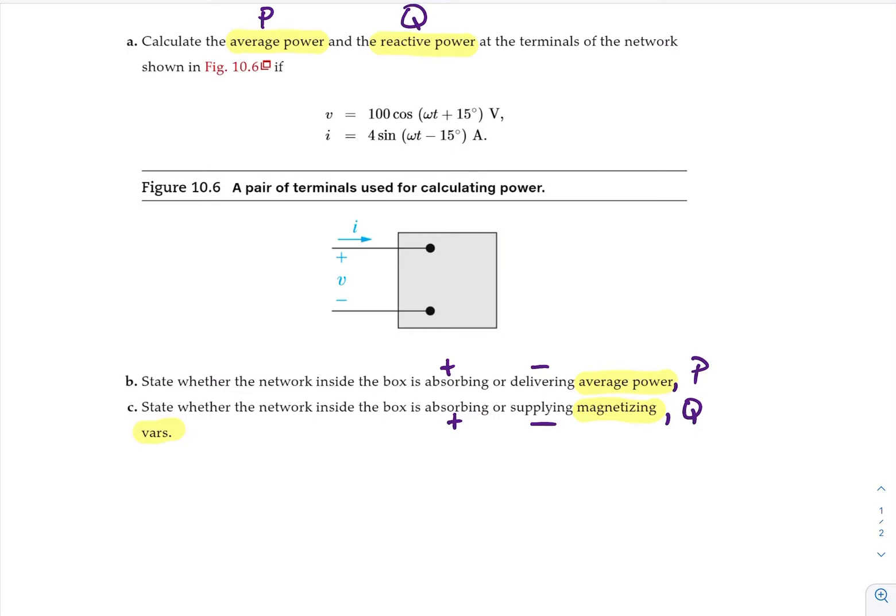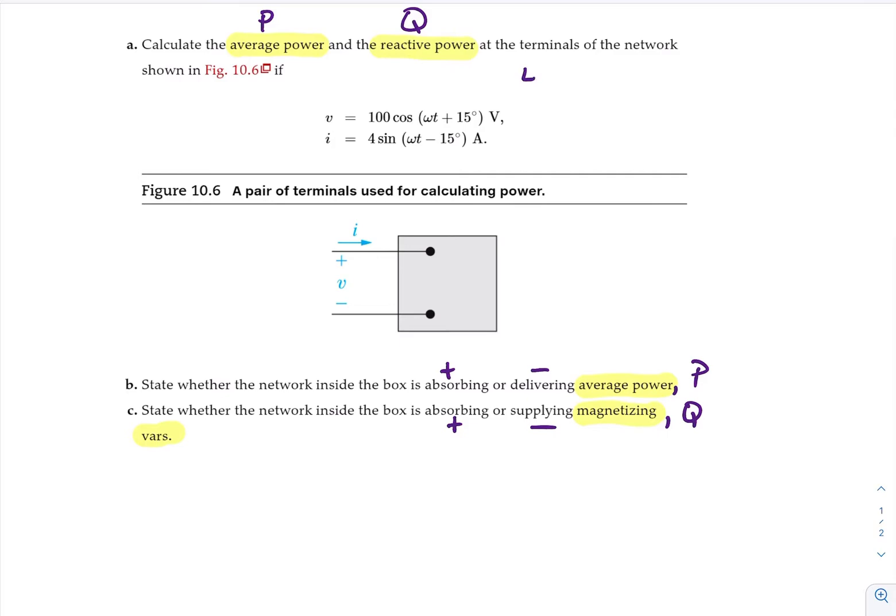The equations we will use to solve this problem are equation 10.5, which is P, meaning average power, is equal to the magnitude of maximum voltage times maximum current, divided by 2, times cosine of the phase shift of the voltage minus the phase shift of the current, and that's in watts.